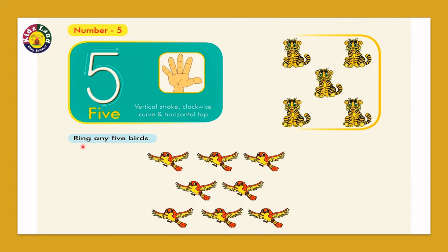Now what does it say? Ring any five birds. Okay, start ringing. Give a ring on each bird and start counting. One bird, two bird, three bird, four bird, and five birds. So what did we do? We have given a circle of five birds.